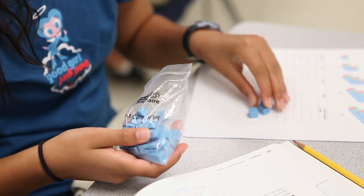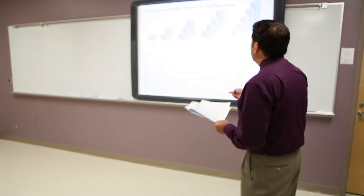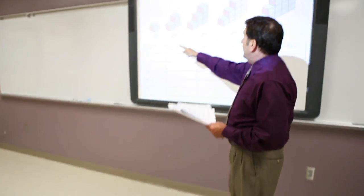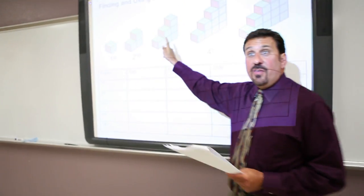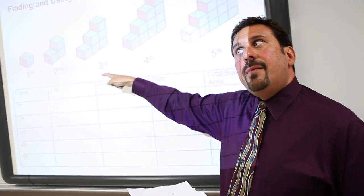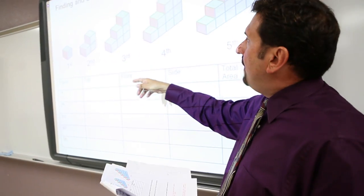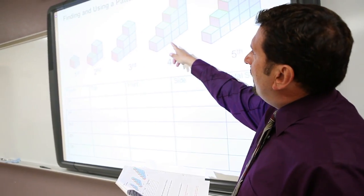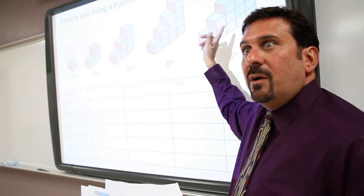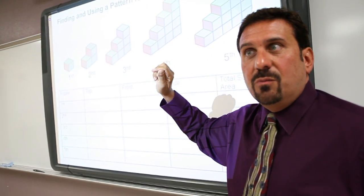What we're going to do is use these centimeter cubes to find the surface area of each of these figures — the first one, the second one, the third one. And then we're even going to see if we can come up with a pattern to figure out the fourth one and even the fifth one.